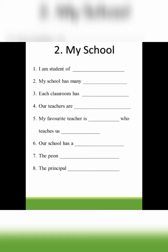Number four: Our teachers are hard working, loving, caring. Number five: My favorite teacher is dash — write her name, the teacher who teaches Hindi, Math, Punjabi, or English. Number six: Our school has a big playground, a big building, library, or computer room — whatever you want to write. Write the correct spellings; learn the spellings properly.